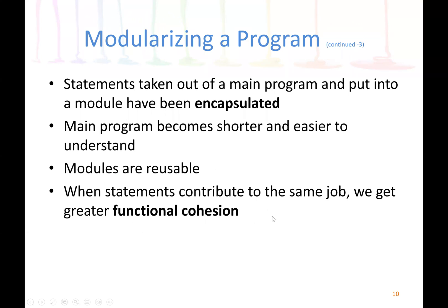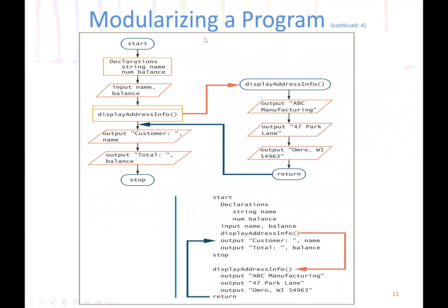The main program becomes shorter and easier to understand, and the modules can be reused. When statements contribute to the same job, we achieve greater functional cohesion. In our flowchart example, we can see the module named 'display address info' being called. We know it is a module because it has open and close parentheses — the arguments or parameters. This module is defined separately and then called in the main method.